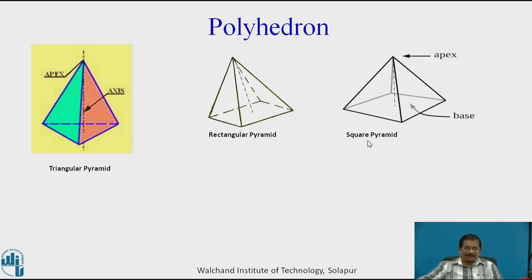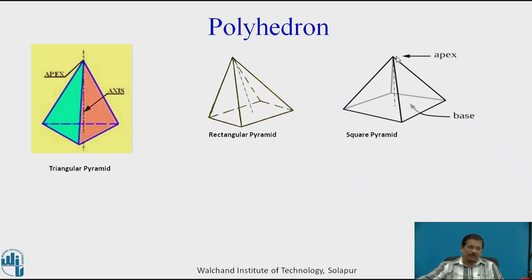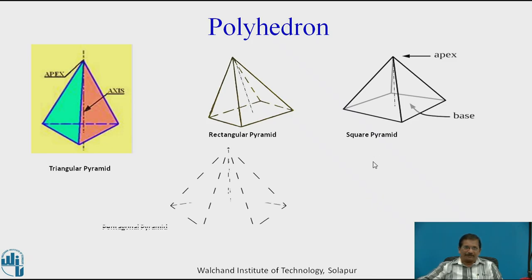This is a square pyramid. The base will be a square. The axis length will be given on the perpendicular line drawn from the center of the square. You will get apex O, which will be joined with corners O1, O2, O3, and O4. The axis will be represented accordingly. In case of a pyramid, all the side faces will be triangular.